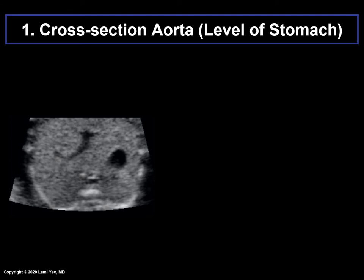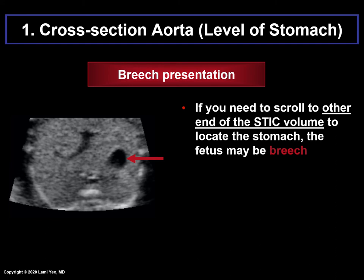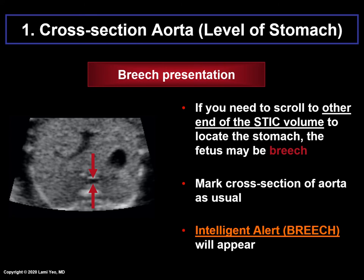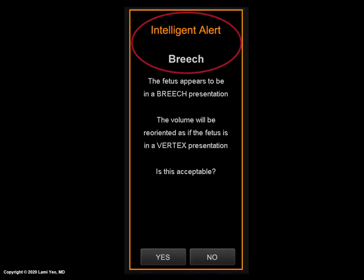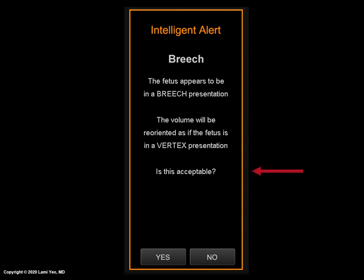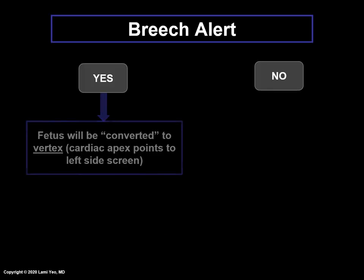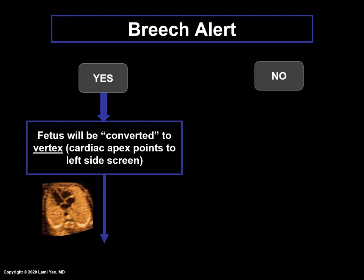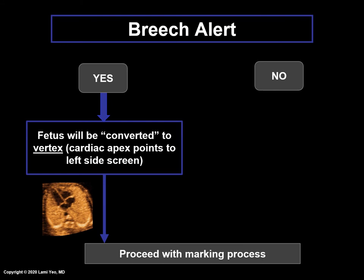Occasionally, you may need to scroll to the other end of the STIC volume to locate the stomach — this may mean the fetus is breech. Go ahead and mark the cross section of the aorta as usual, and then an intelligent alert known as a breech alert will appear. The breech alert states that the fetus appears to be in a breech presentation and that the volume will be reoriented as if the fetus is in a vertex presentation. The user must click yes or no. If yes, FINE will automatically convert the fetus to a vertex presentation so that the cardiac apex points to the left side of the screen, and the marking process continues as usual.